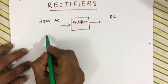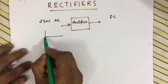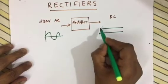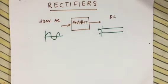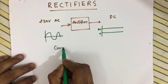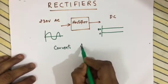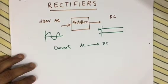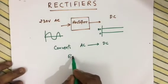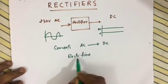A rectifier is a circuit that converts AC to DC. For example, suppose we need 5 volt DC — that is DC. Rectification is the process of converting AC to DC, and such circuits are known as rectifiers. Rectifiers are of two basic types.